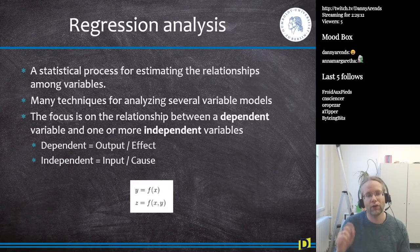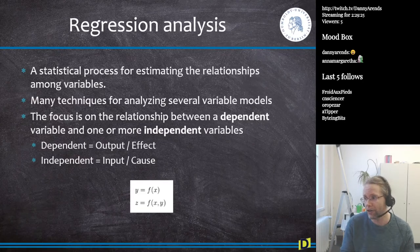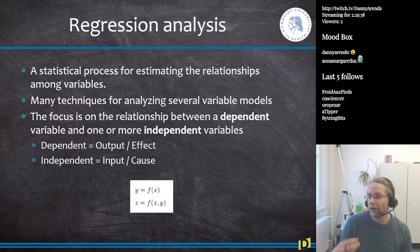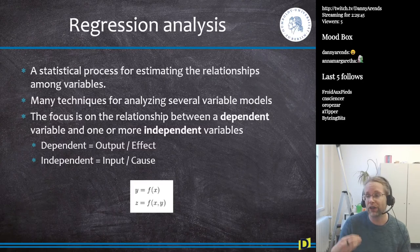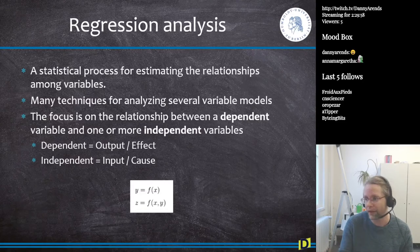In regression, the focus is on the relationship between a dependent variable and one or more independent variables. The dependent variable is the thing you are trying to model — in our case, the fatness or body weight of the Berlin fat mouse. The independent variables are the input or cause, such as food intake and the amount of exercise, things we think might be affecting the dependent variable.